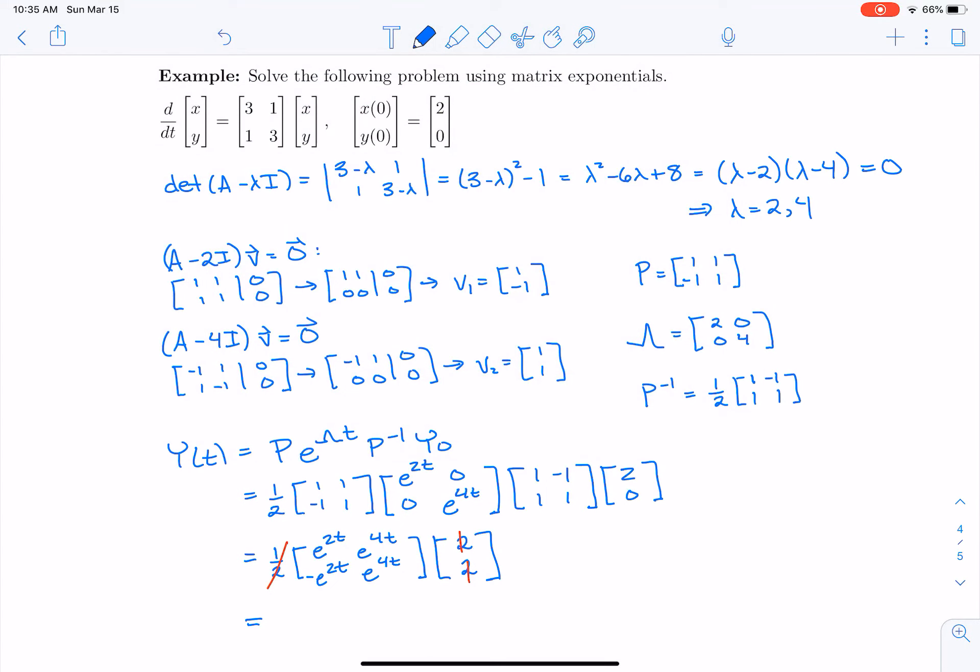And then when I do the final matrix multiplication, I get e^(2t) + e^(4t) for the first component, and then -e^(2t) + e^(4t) for that second component. So there's my solution. X(t) is e^(2t) + e^(4t), and Y(t) is -e^(2t) + e^(4t).